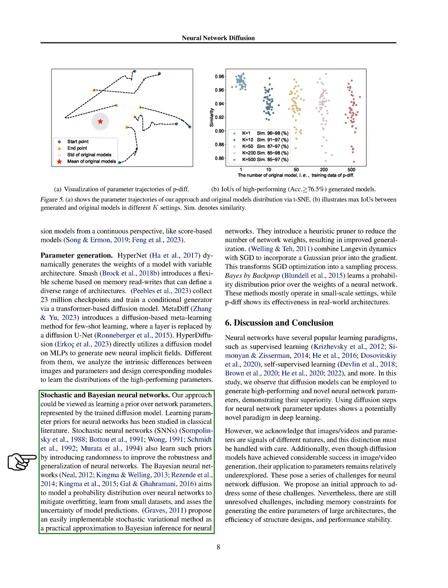Lastly, we discuss how our approach relates to stochastic and Bayesian neural networks, which also learn priors over network parameters to improve robustness, generalization, and uncertainty assessment.